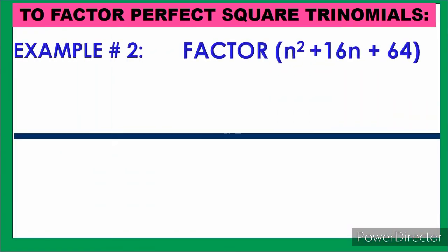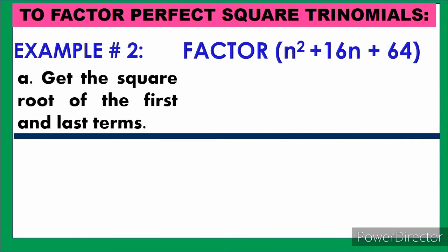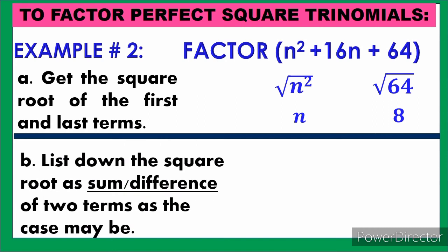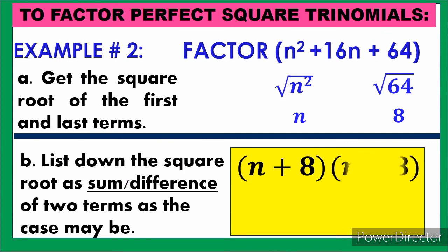Let's have another example: factor n² plus 16n plus 64. Step one — get the square root of the first and last terms: square root of n² is n, and square root of 64 is 8. Step two — write the sum or difference: n plus 8 times n plus 8, or (n plus 8)². I use the positive sign because the middle term of the trinomial is positive.